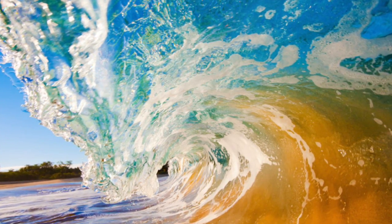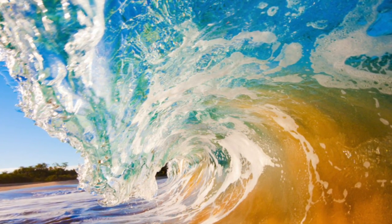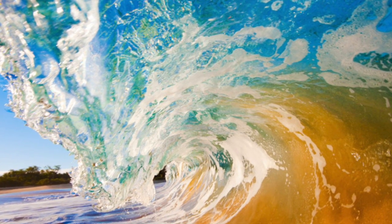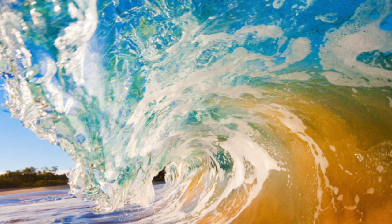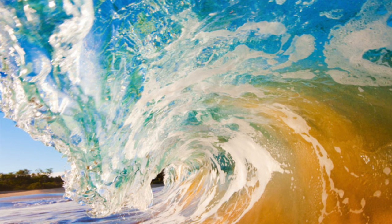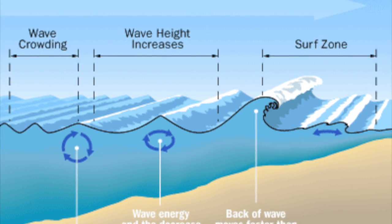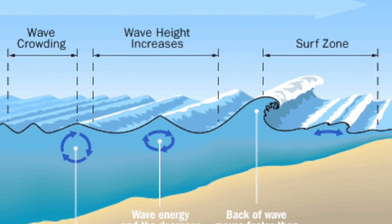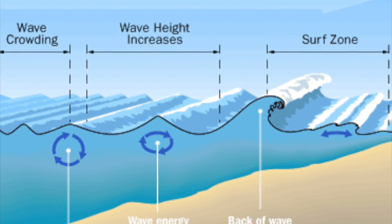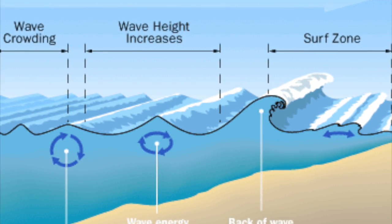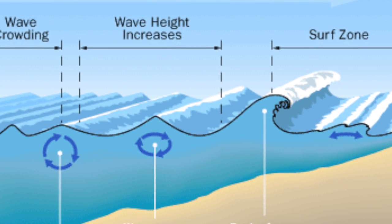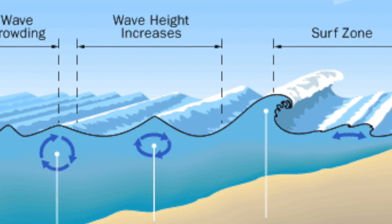There are three types of wave breaks: spilling, plunging, and surging. Spilling breakers occur when a gentle beach slope allows waves to disperse energy gradually. Plunging breakers occur on a moderately steep beach slope, giving waves a curling shape that propels surfers. Surging breakers occur on an abrupt beach slope, making waves build up and break rapidly at the shore.